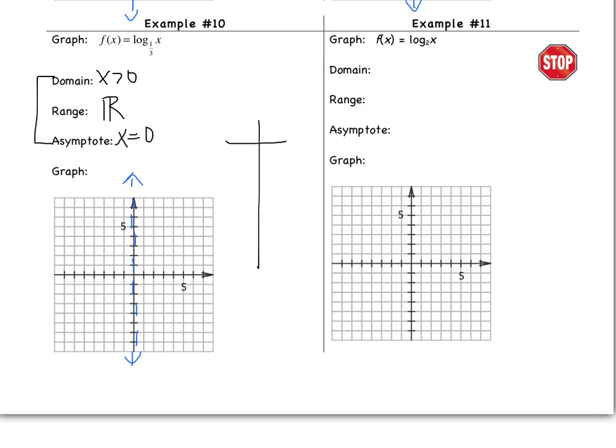Now in order to graph it, I need a table. Remember that this is y equals log base 1 third of x. I'm going to re-express this so I have 1 third to the y power equals x. Again, y is the exponent so that's what I'm going to substitute for. I'm going to substitute 0, negative 1, negative 2, 1 and 2. 1 third to the 0 power is 1. 1 third to the first power is 1 third. 1 third to the second power is 1 ninth. 1 third to the negative first power is not negative 1 third. Remember, it means you're going to have to flip it so it becomes 3. 1 third to the negative second power becomes 9.